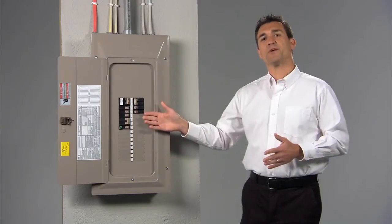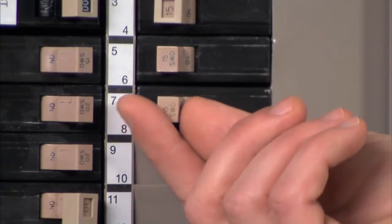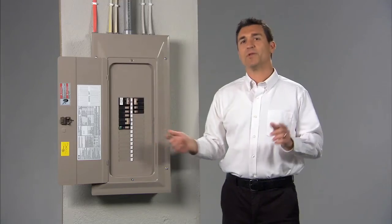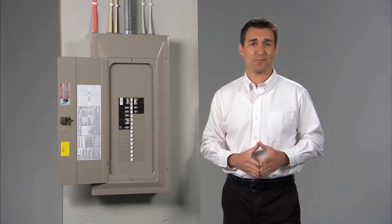If a circuit breaker trips, try to reset it by turning it to the off position and then back to the on position. Do this only once. This is important. Don't keep resetting a circuit breaker.